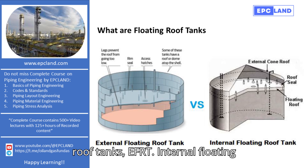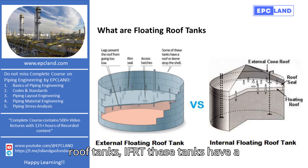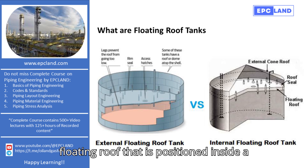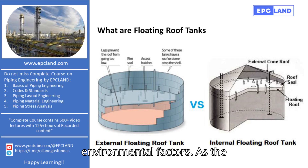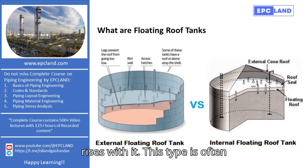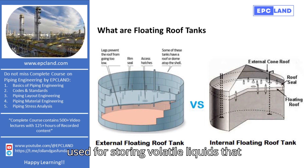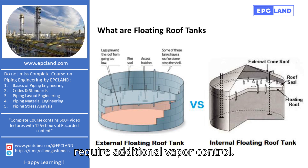Internal floating roof tanks, or IFRT: these tanks have a floating roof that is positioned inside a fixed roof structure. The fixed roof provides additional protection from environmental factors. As the liquid level rises, the internal roof rises with it. This type is often used for storing volatile liquids that require additional vapor control.